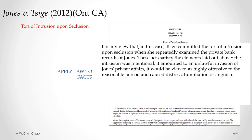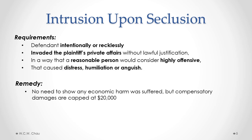What Winnie did was intentional and amounted to an unlawful invasion of Jones's private affairs, and it is viewed as highly offensive to a reasonable person and caused distress, humiliation, or anguish. To summarize, based on Jones and Tusig, the four requirements for the tort of intrusion upon seclusion are: first, the defendant intentionally or recklessly; second, invaded the plaintiff's private affairs without lawful justification; third, in a way that a reasonable person would consider highly offensive; and fourth, that caused distress, humiliation, or anguish. All four requirements need to be met.